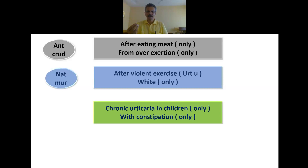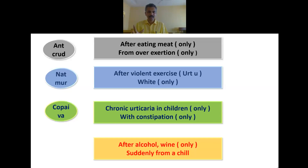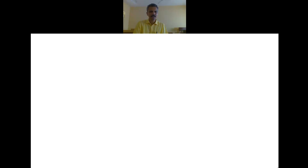Ninth: chronic urticaria in children and urticaria associated with constipation. It's a rare remedy — don't think of Sepia, Arsenic, or Nux Vomica. The answer is Copaiva, a rare remedy. Tenth: urticarial rashes after alcohol or wine, or after a person suddenly becomes chilled and gets urticarial rashes. The only remedy to remember here is Chloral.